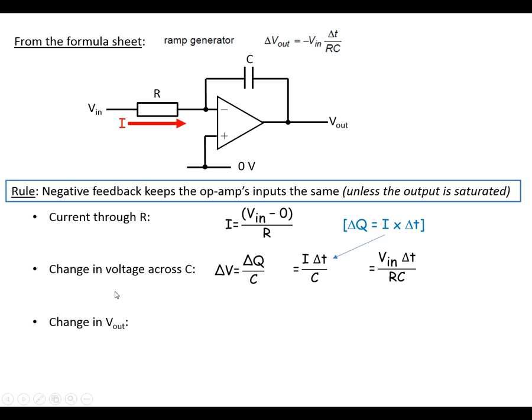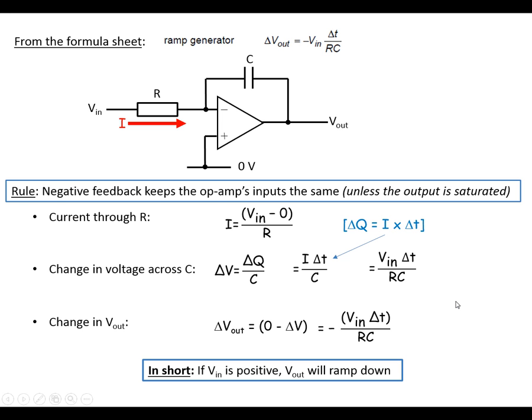So that's where the RC comes from. So how much does the output voltage change by? Well, the output voltage: the left-hand side of the capacitor is held at 0 volts, and we're going to lose delta V across it. So this comes out to being, as the formula at the top shows, minus V in times delta T over RC. You won't need this derivation for the exam, but this is the formula and this is where it comes from.